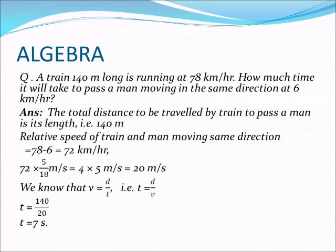To pass a man, the train has to move its entire body length. So the distance to be traveled by the train to pass the man is its length, that is 140 meter. This is given in the question.